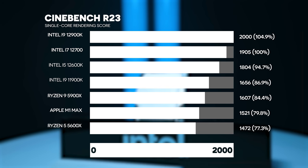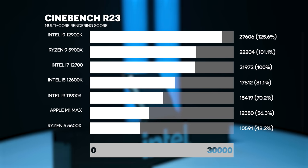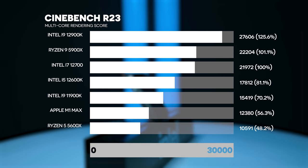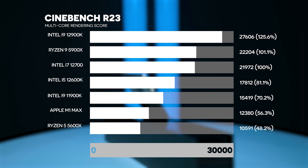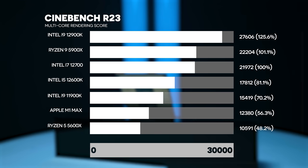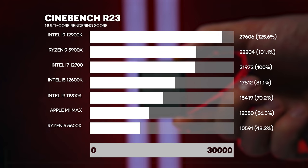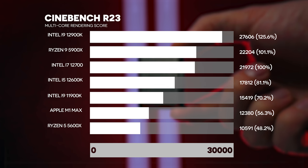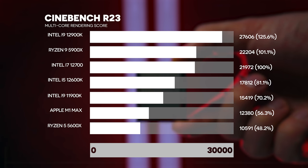That 15 percent single-core advantage translates into a little bit more snappy performance in everyday tasks - things open a little bit faster. Moving on to the multi-core score, the Ryzen 5900X is slightly faster - about one percent faster than the 12700. The i9 12900K is 25.6 percent higher, and the 12600K is roughly 19 percent slower. The 12700 again slots between the i5 12600K and 12900K, and is roughly on par with the 5900X - which is interesting because the 5900X has 12 performance cores and 24 threads.